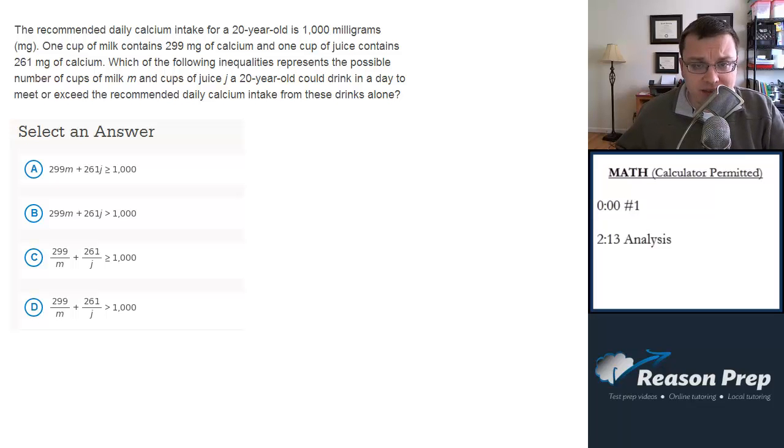The recommended daily calcium intake for a 20-year-old is 1,000 mg. One cup of milk contains 299 mg of calcium and one cup of juice contains 261 mg of calcium. Which of the following inequalities represents the possible number of cups of milk M and cups of juice J a 20-year-old could drink in a day to meet or exceed the recommended daily calcium intake from these drinks alone?